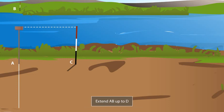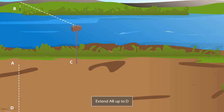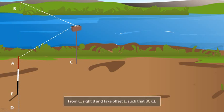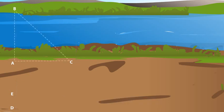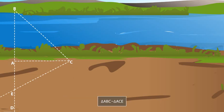With the cross staff kept at A, extend AB up to D. Set a ranging rod at D. Then, set the cross staff at C and sight the ranging rod at B through the staff. Keeping the cross staff at C, take a perpendicular offset to BC up to E such that the ranging rod at E is on the line AD. In this way, you obtain two similar triangles, ABC and ACE.